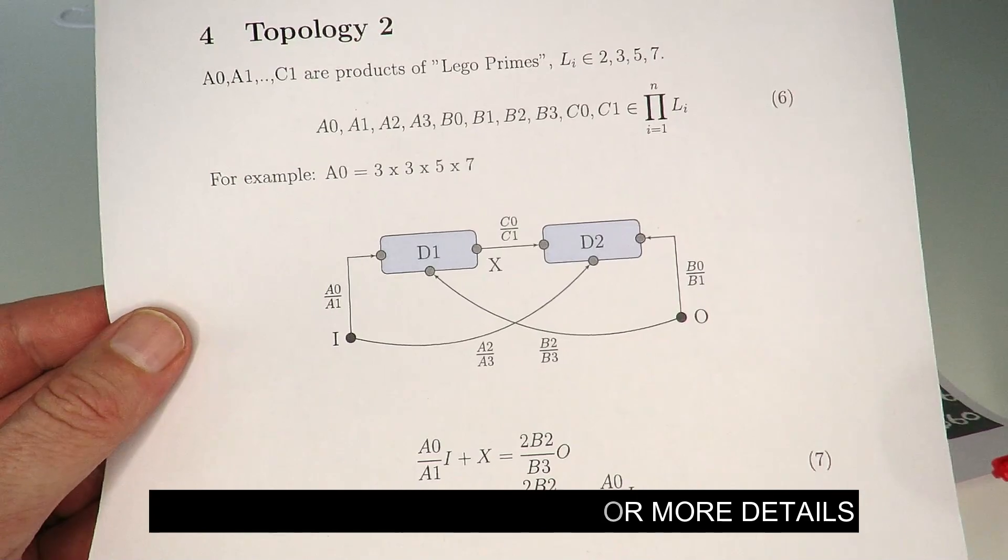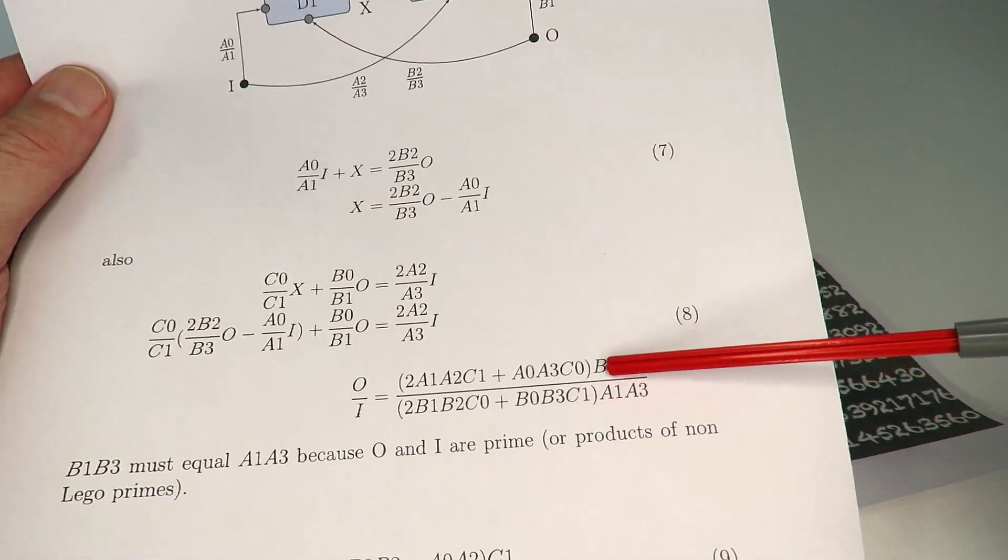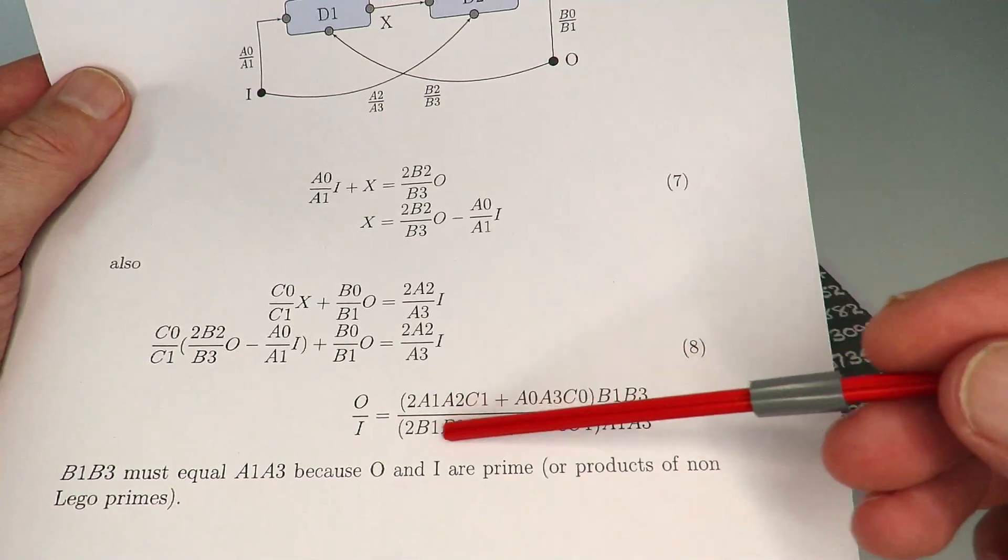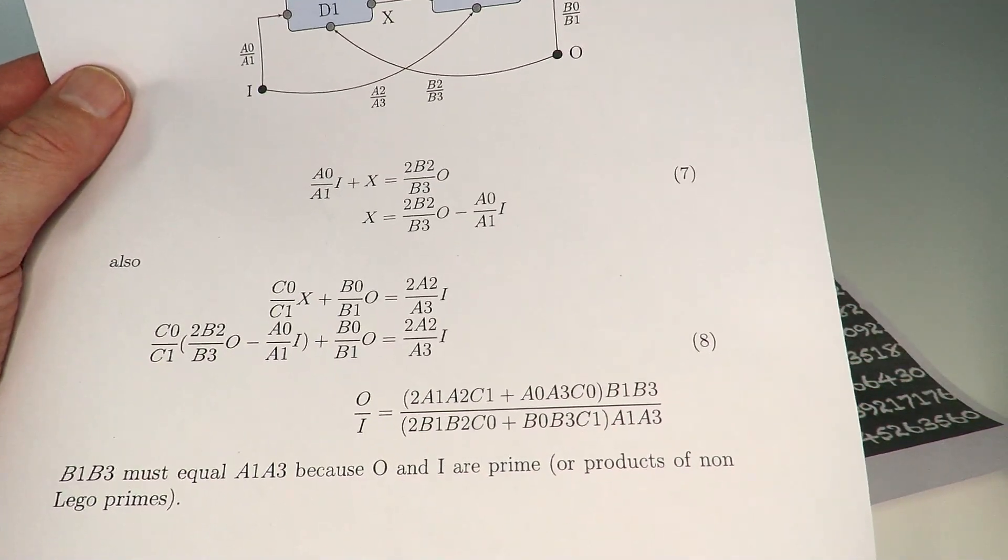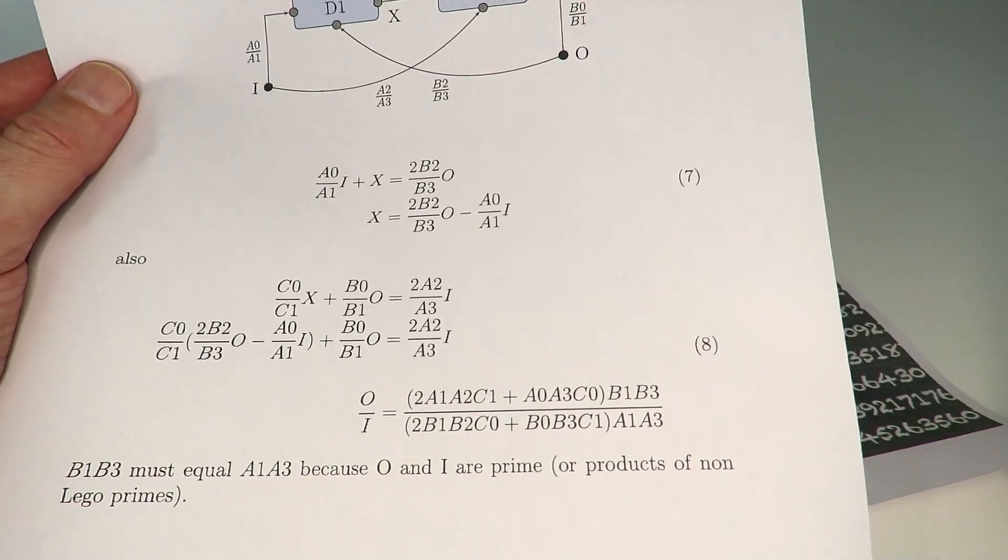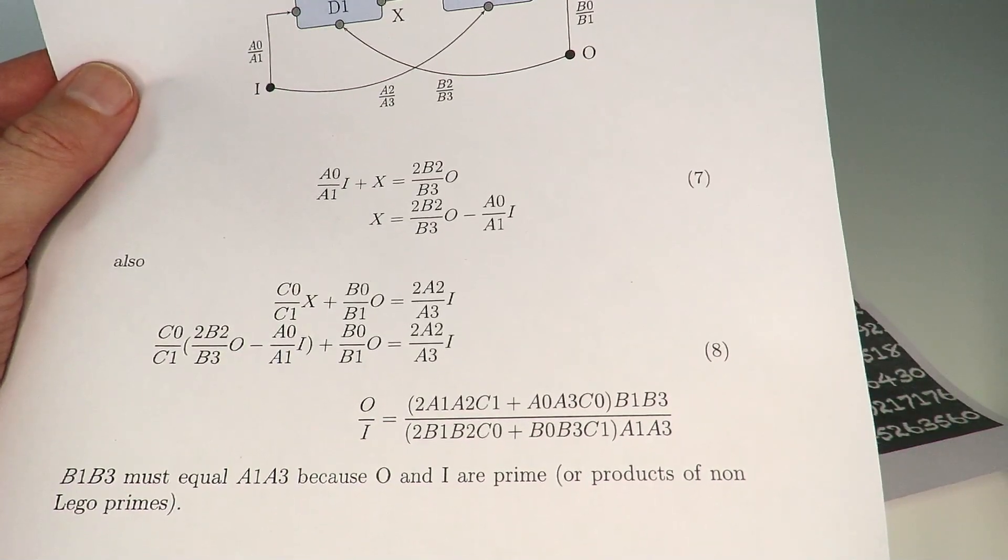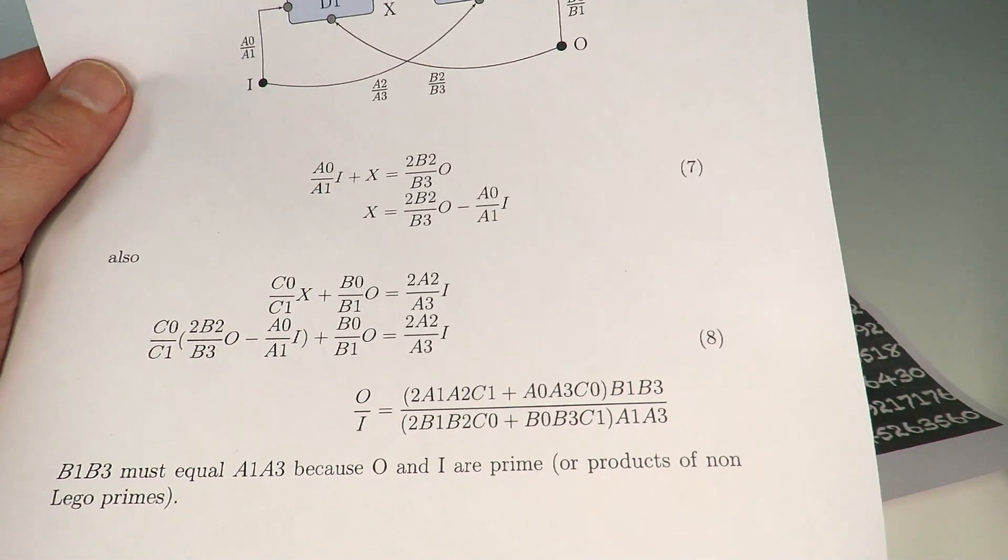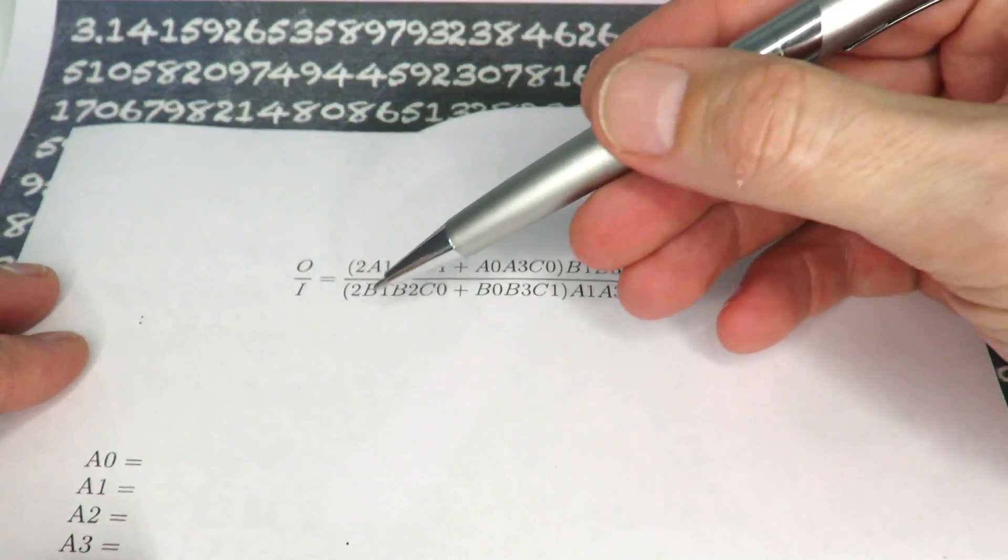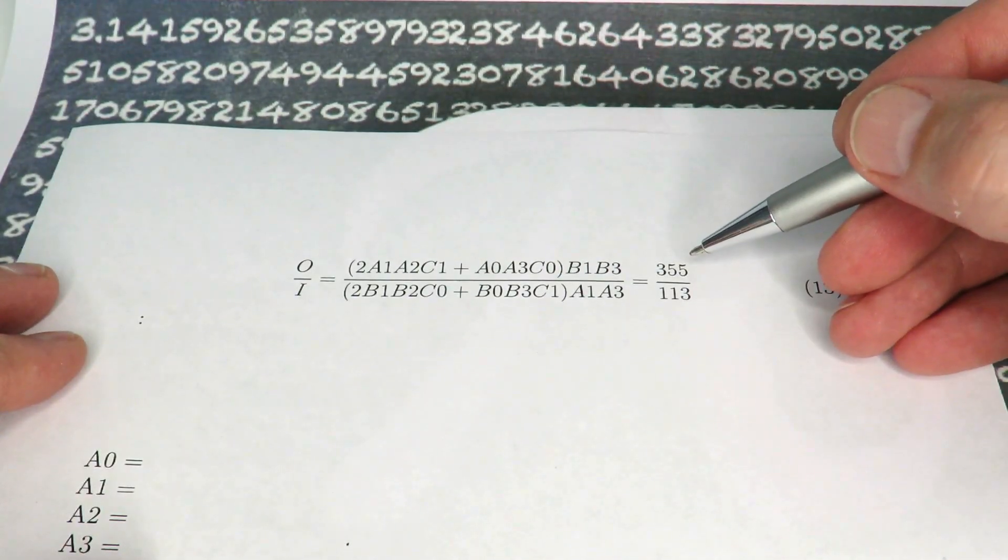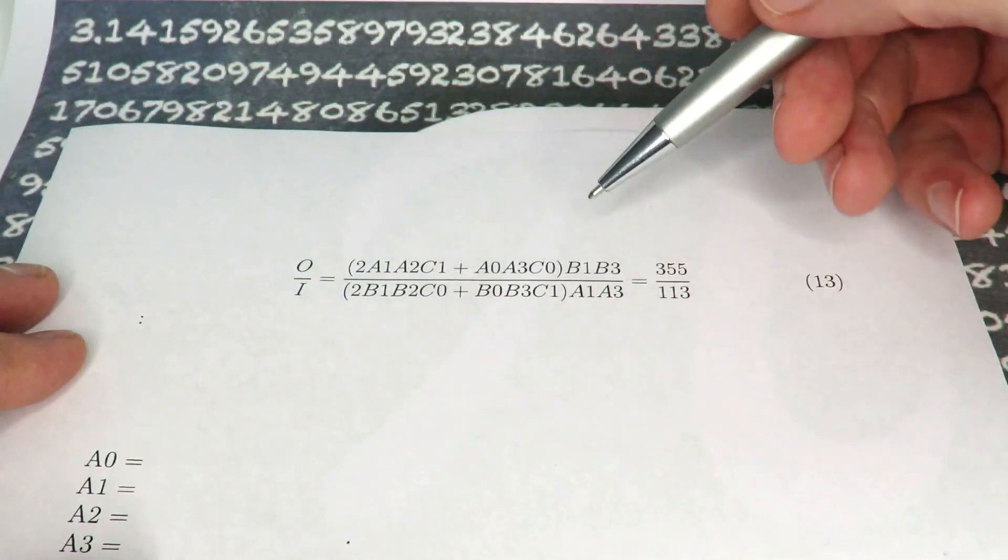But what it comes down to is solving this equation at the bottom here, trying to figure out different values for a1 to c1, where a1 to c1 are of course Lego prime. So that's using the gear ratios 2, 3, 5, and 7. Okay, so what we need to do to solve this equation here and the numerator and the denominator that gives the values of 355 and 113.